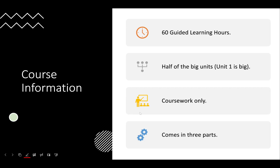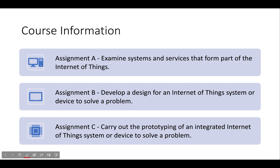Some course information: this is going to be 60 guided learning hours, so this is half a unit. Units one, two, and three are the bigger units; this is only half of that in guided learning hours. This is coursework only — no exam. It comes in three parts: assignments A, B, and C. Assignment A requires you to examine systems and services that form part of the Internet of Things — in short, it's just research.